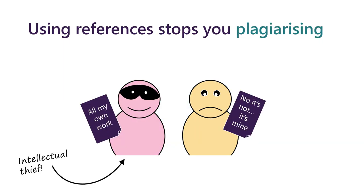Another essential aspect of referencing is that it stops you from plagiarizing. Plagiarism is where you inadvertently or purposefully present somebody else's work as your own. This should not be taken as the university discouraging you from using other ideas — far from it. Good academic work is based on sound evidence from other sources, but you must acknowledge where they came from. This not only adds strength to your work but avoids plagiarism by acknowledging where those ideas came from. If you do present somebody else's work as your own, this is plagiarism — a serious academic offence. Referencing can help you avoid this.